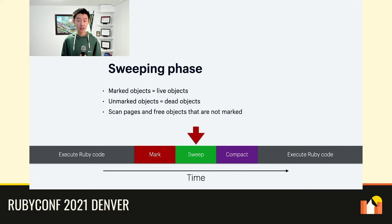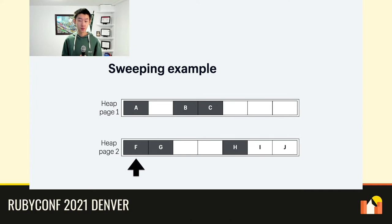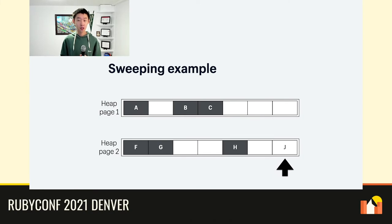We can simply scan the slots on the pages and free the ones that are not marked. Using our earlier example, we move our cursor to the first unmarked object — object D — and free it to reclaim the memory. We continue until we reach the next unmarked object, object E. We've reached the end of page 1, so we move to sweep page 2. Again, we move the cursor to the first unmarked object and free object I, then continue to object J. Now that we've swept all the pages, sweeping is complete.